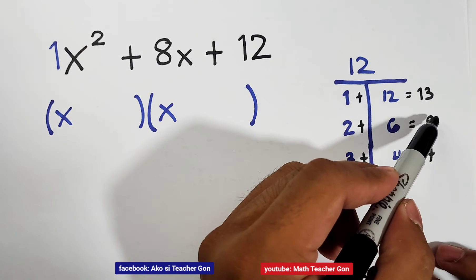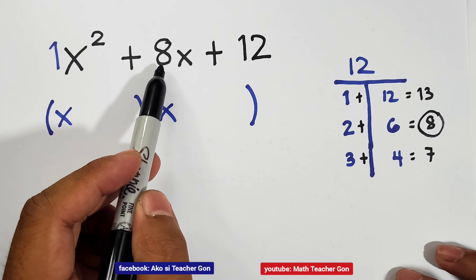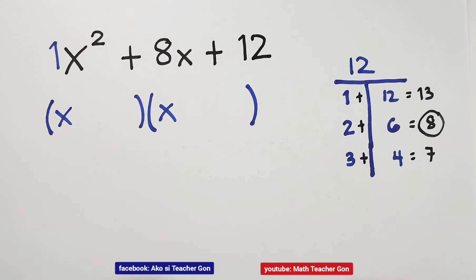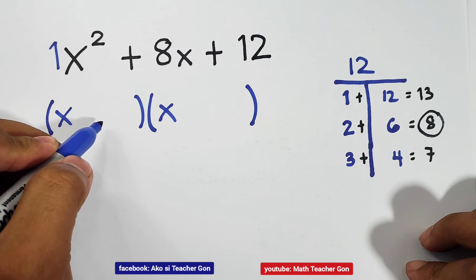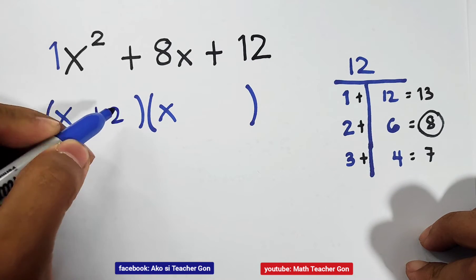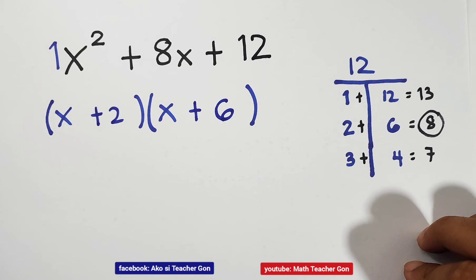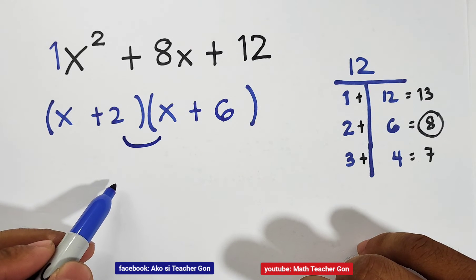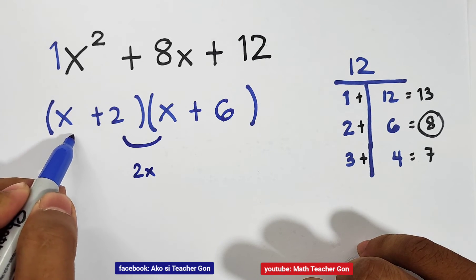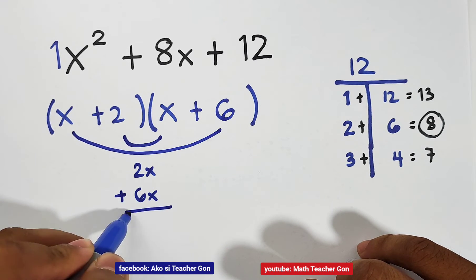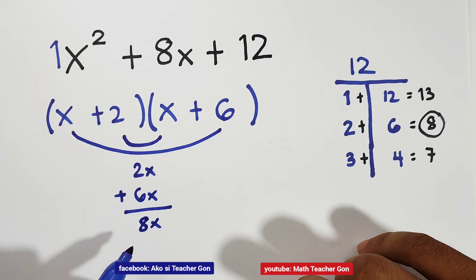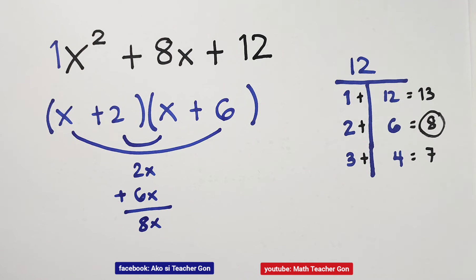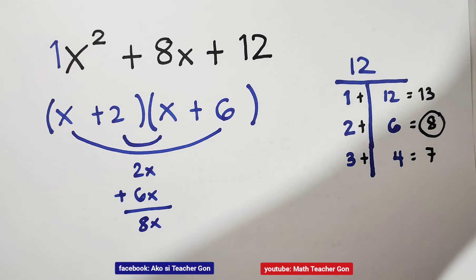As you can see, this 8 is the same as the coefficient of your middle term. Since this sum is equal to the coefficient of your middle term, therefore we're going to use 2 and 6 as the factors of 12 for the second terms of our two parentheses. So we have x plus 2 and x plus 6. How do we know whether our answer is correct? When we multiply x times 2 that is 2x, and x times 6 that is 6x. When you add them, that gives you 8x. Meaning the factors are x plus 2 times x plus 6.